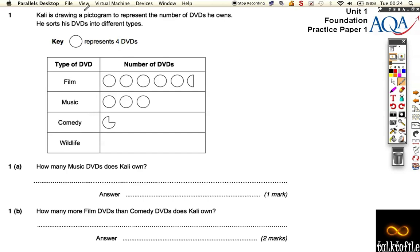It tells us that Kali's drawing a pictogram to represent the number of DVDs he owns. Well, I'm not sure why Kali's doing this, but let's just go with it. This circle represents four. The first question asks us how many music DVDs does Kali own? Well, my little tip is actually, before you answer the first question, notice that this says four and then just write down the totals and it will be really helpful.